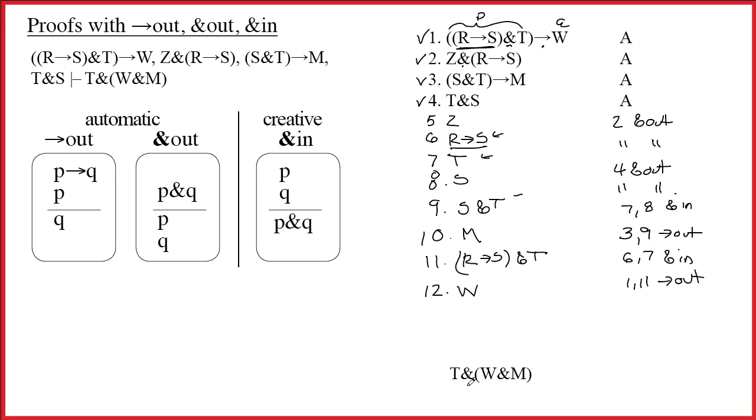But you've always got to have one eye on your conclusion. And when you look at the conclusion, you see that this first ampersand's the main connective. So if we're going to build this, we're going to have to have T on one line and W and M on another line. I take a look up above.